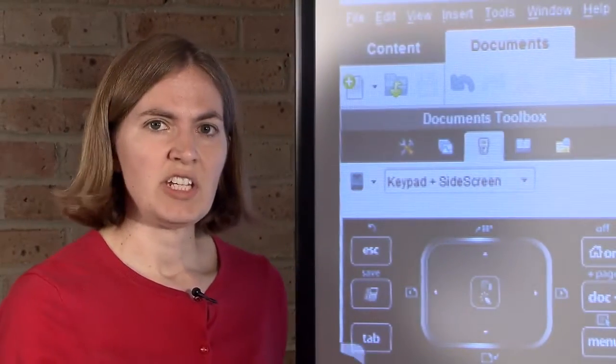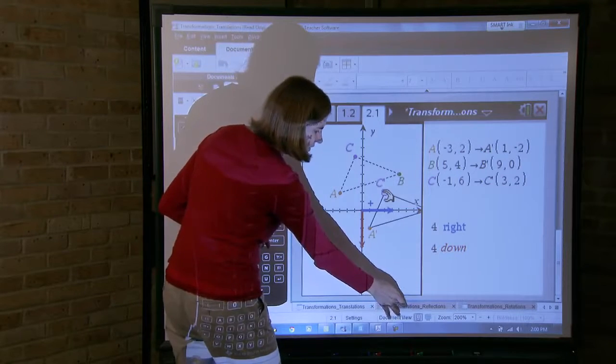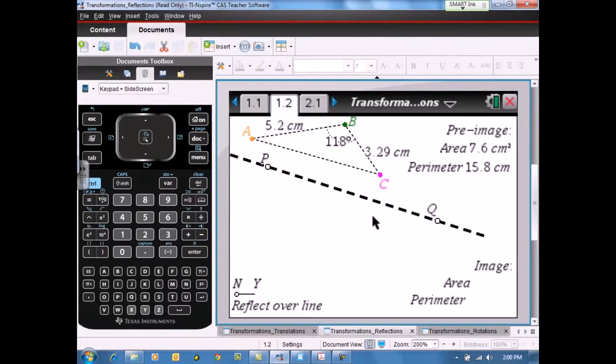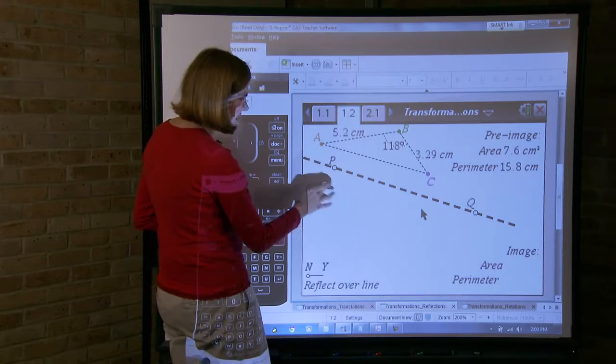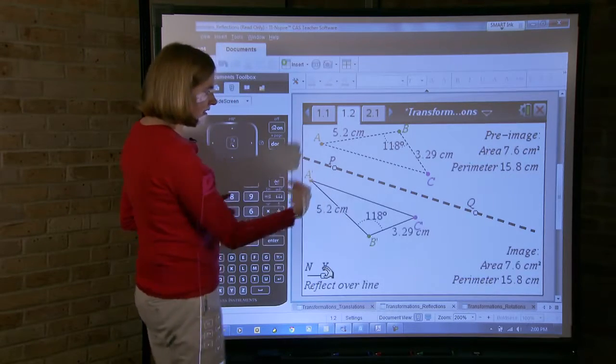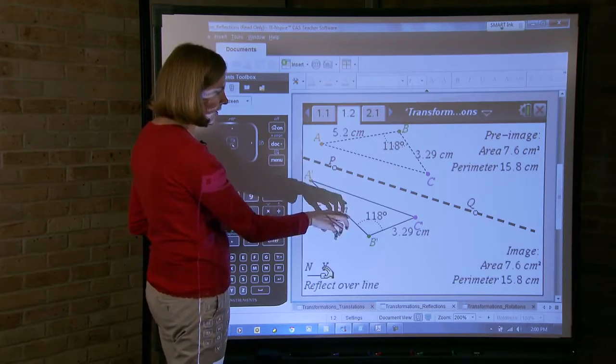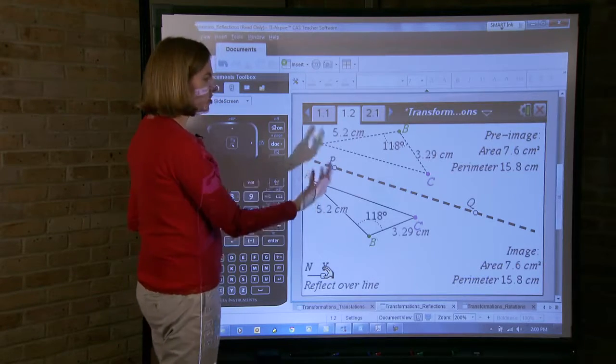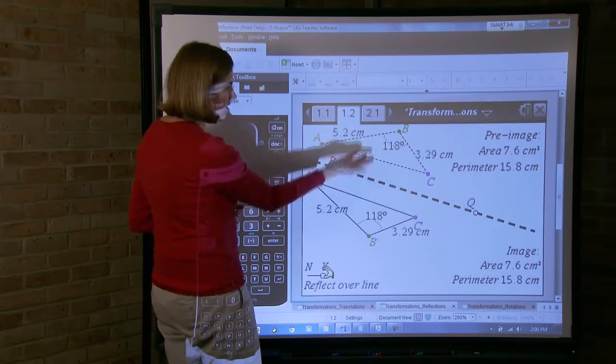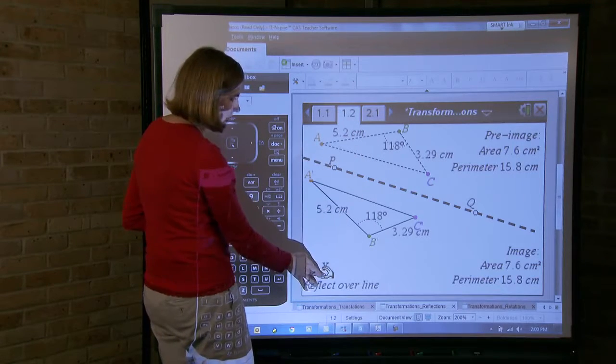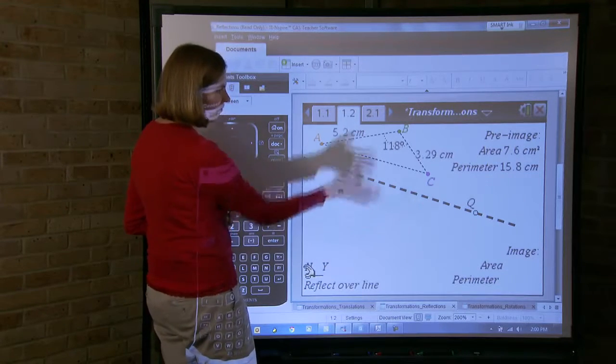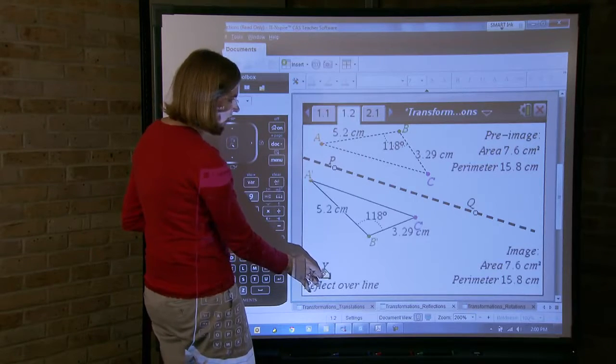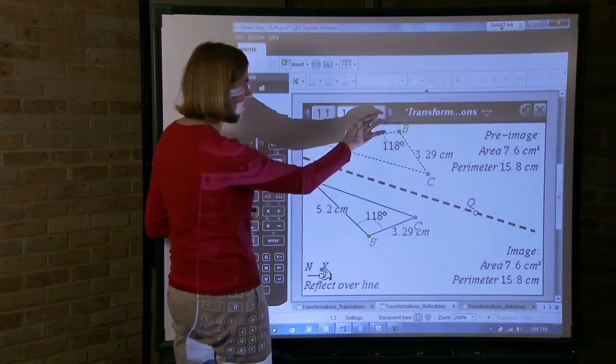We have another activity on transformations that deals particularly with reflections. And again, getting students to think about that idea of two objects being congruent to each other, when there is a reflection that would carry one onto the other. When I sent this document to my students, I sent it with the image already being reflected so that they could go through that action of thinking these two images are congruent to each other because one reflects onto the other about some line.